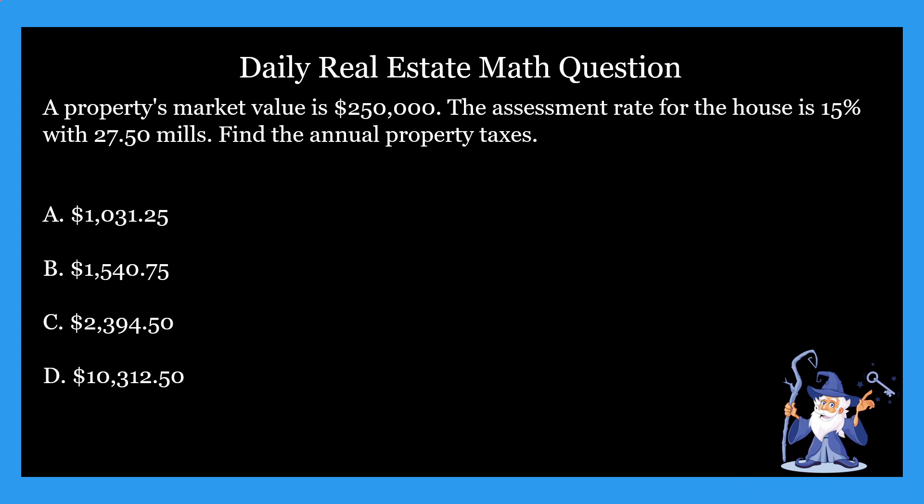So the question states: a property's market value is $250,000. The assessment rate for the house is 15% with 27.50 mills. Find the annual property taxes. It gives us four options here, but I'm not going to read through the options — I'm just going to jump right into it and give you guys time to figure out the problem. If you have no idea what you're doing, that's okay. We're going to figure it all out together. Go ahead and pause here if you need to.